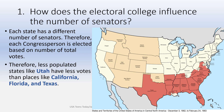How does the Electoral College influence the number of senators elected? So we're looking at what's actually going on. Each state has a different number of senators. Therefore, each congressperson is elected based on the number of total votes.